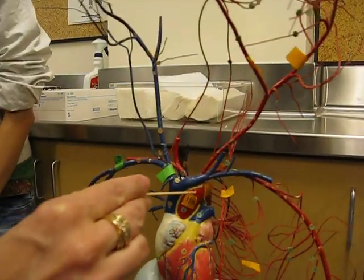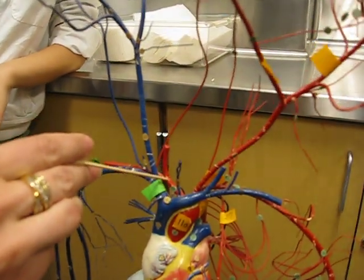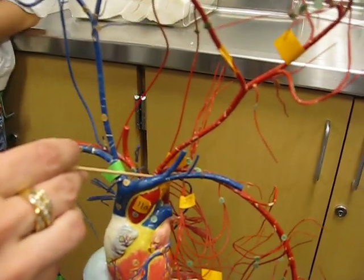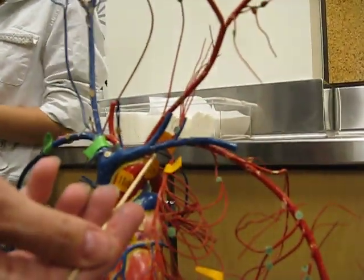Okay, ascending aorta to the arch, you've got the first branch which is the brachiocephalic, the second branch which is the left common carotid, and the third branch which is the left subclavian.